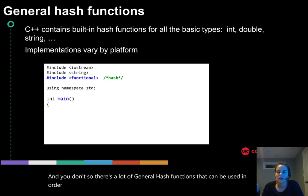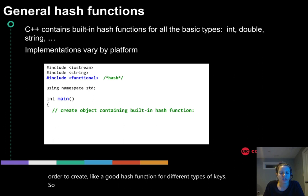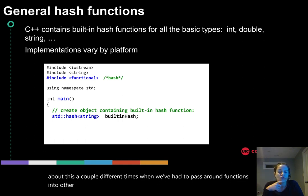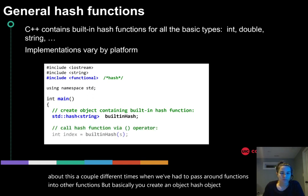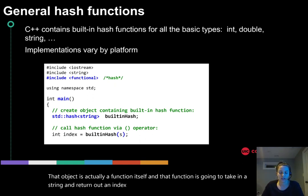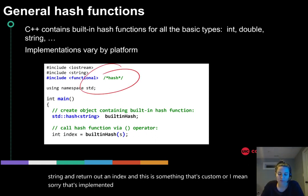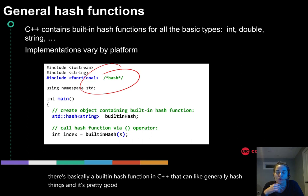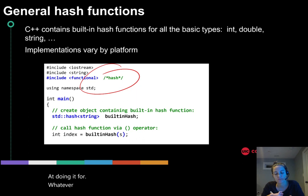There's a lot of general hash functions that can be used to create a good hash function for different types of keys. The built-in hash function uses something called a functor. We've talked about this a couple different times when we've had to pass around functions into other functions. Basically you create an object, a hash object, and then that object is actually a function itself.